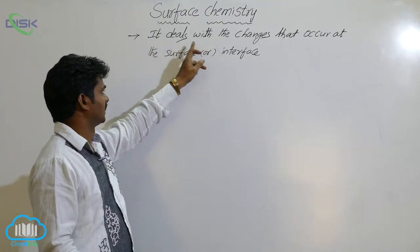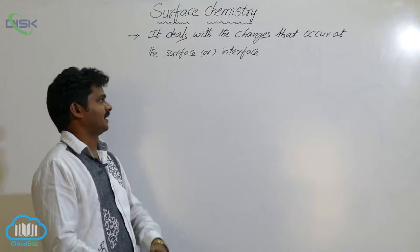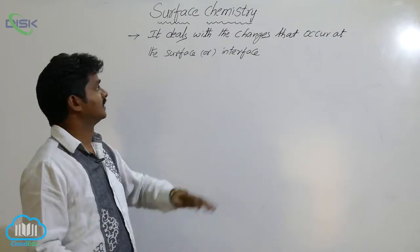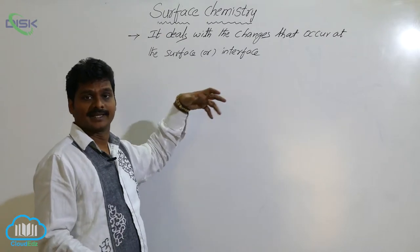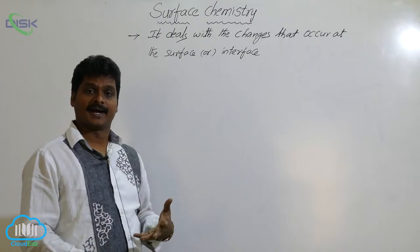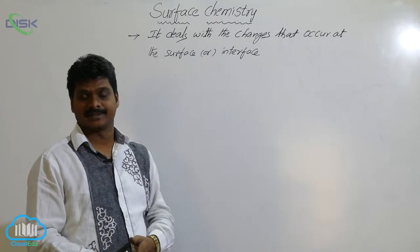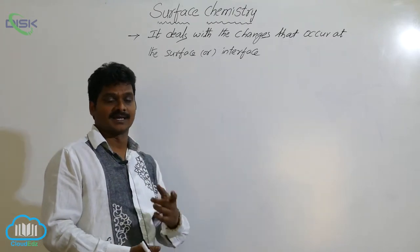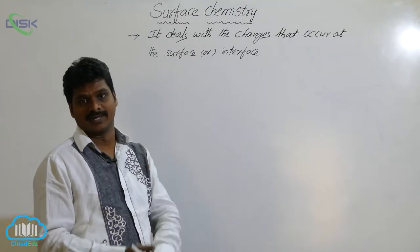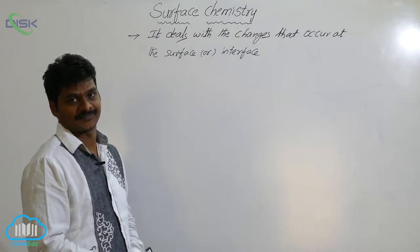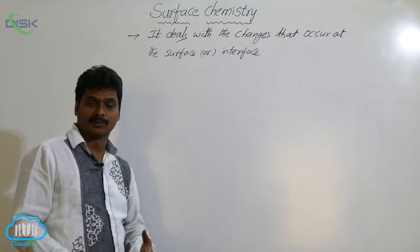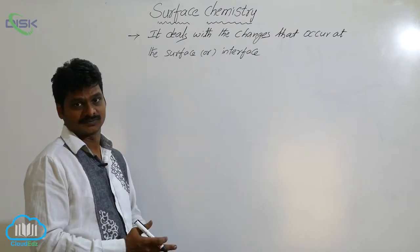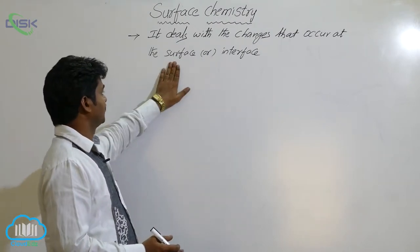Surface chemistry deals with the changes that occur at the surface or interface. The weightage of this chapter: for IP it is six marks, for AMSET one bit, and for mains also one question will be given from this chapter. Can you say some examples of phenomena that occur at the surface or interface?